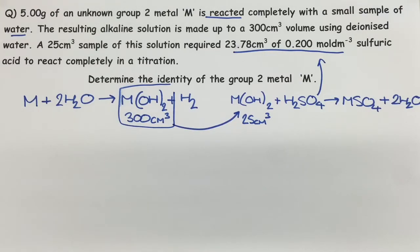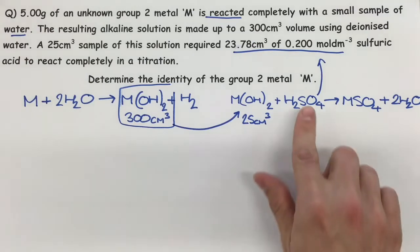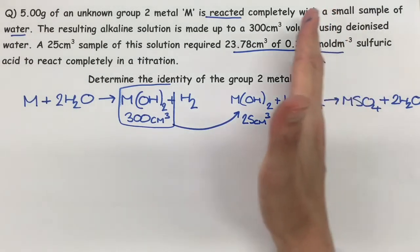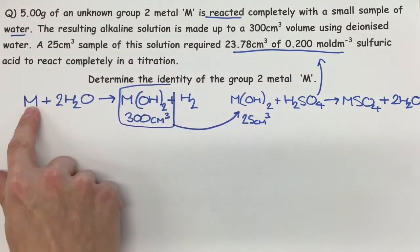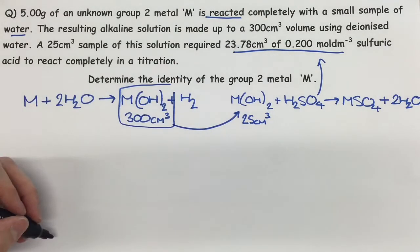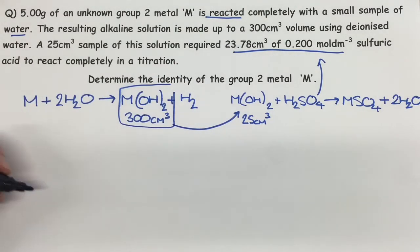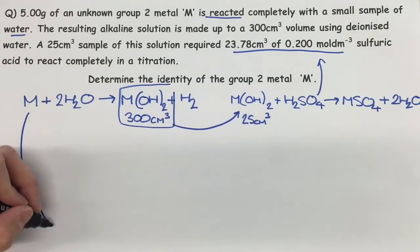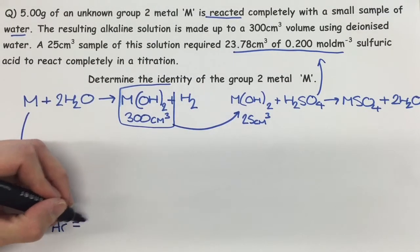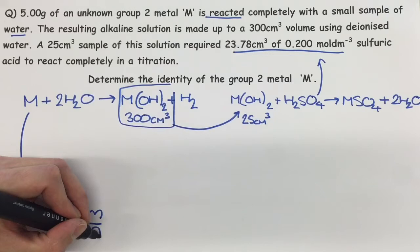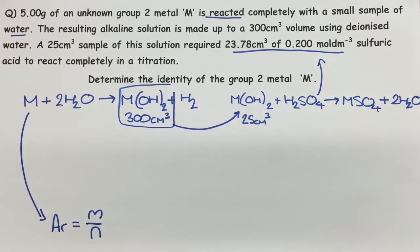So let's start off and have a look at what we're going to do. We're basically going to start here with the H₂SO₄ and work our way backwards to get to the identity of the metal M. Our final step — if we think about what the last thing is that we need to do — for group 2 metal M, we should do AR equals mass divided by moles. That should be our last step, so that's what we want to work towards.